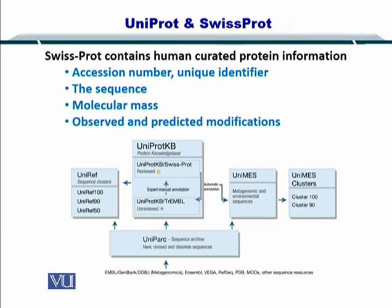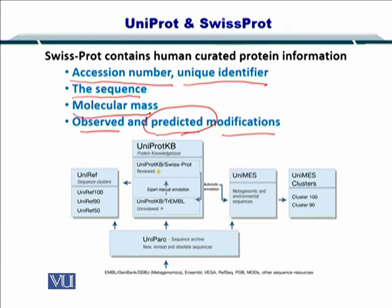To get into the specific information available on these portals: UniProt provides the accession number of the proteins, a unique identifier to search for these proteins, and the amino acid sequence is also provided within the database. Alongside that, molecular mass as well as observed and predicted modifications are included. These modifications are the post-translational modifications that may exist on that sequence, along with predictions of such modifications.